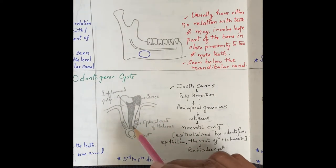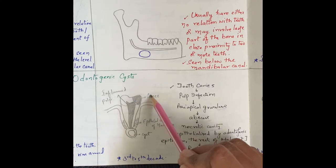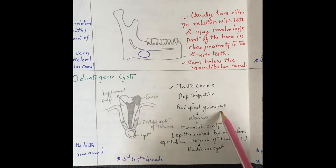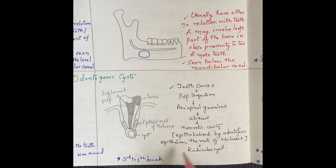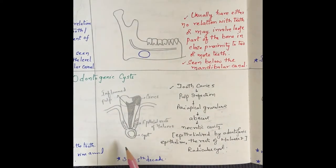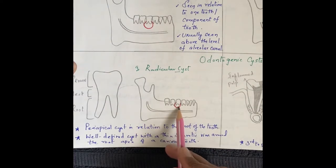Remember this pathway for examination: carious tooth → infection of the pulp → granuloma formation → abscess formation → necrotic cavity formation → the cavity is epithelialized by odontogenic epithelium → radicular cyst. It occurs in the third to fifth decade. It appears as a well-defined cyst with a sclerotic rim at the root apex.